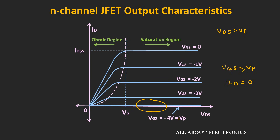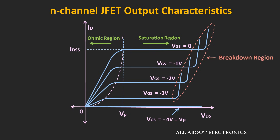Apart from these three regions, there is one more region known as the breakdown region, and like a diode, this region should be avoided. In the saturation region, if we increase Vds beyond a certain limit, there is a vertical rise in the drain current — breakdown has occurred and the current is now limited solely by the external circuit. Generally in the datasheet, the maximum value of Vds is defined, and during operation the value of Vds should be less than this rated value.